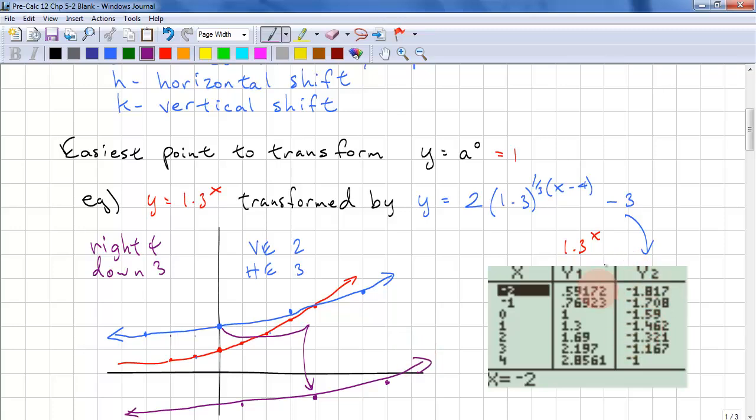If we look at this table of values by plotting this function explicitly, we look at 0 and we get negative 1.59. So roughly there. And if we look at 1, 2, 3, 4, we get negative 1. So it's right there.